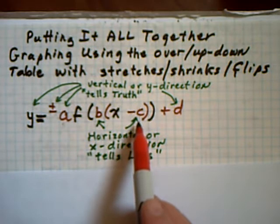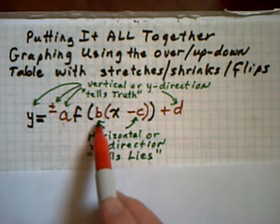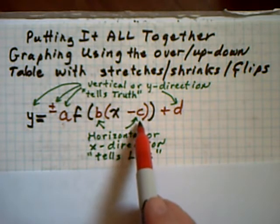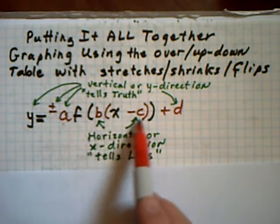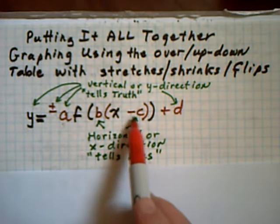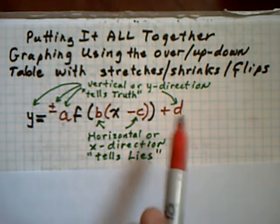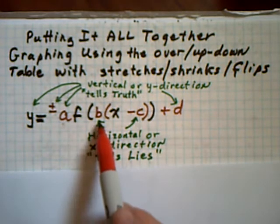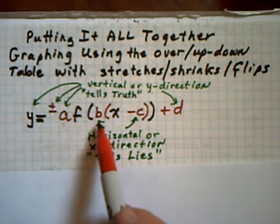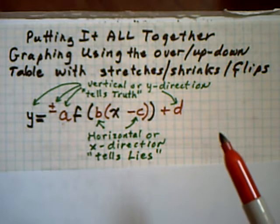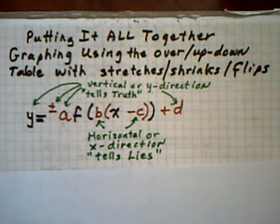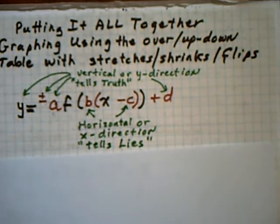Now, in with the x, you have to make sure that you factor out any number that's in front of the x. Everything lies. X is in the horizontal direction, but if it says I'm subtracting 3 in the horizontal, it's really plus 3 — it's really going in the positive 3 direction. If it says I am shrinking by multiplying by 0.5 in with the x, it's really stretching by a factor of 2. So anything in brackets tells lies. You'll see that idea coming up in the next two examples.